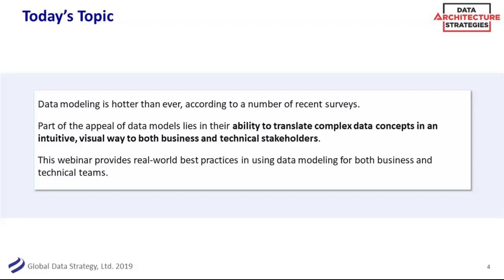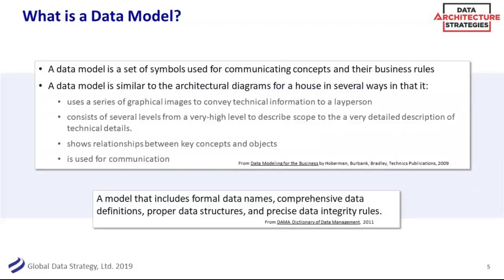As data management professionals and data modelers, we love our definitions. A data model is that set of simple symbols to communicate concepts and the business rules around them — like an architectural diagram for a house. I don't know how to wire all the electricity in my house, but I'm glad somebody does, and I'm really glad that can be communicated in a really clear way. Not only does it convey technical images, but it shows the relationships between concepts and objects — it's not just the boxes on the model, but the lines between them.